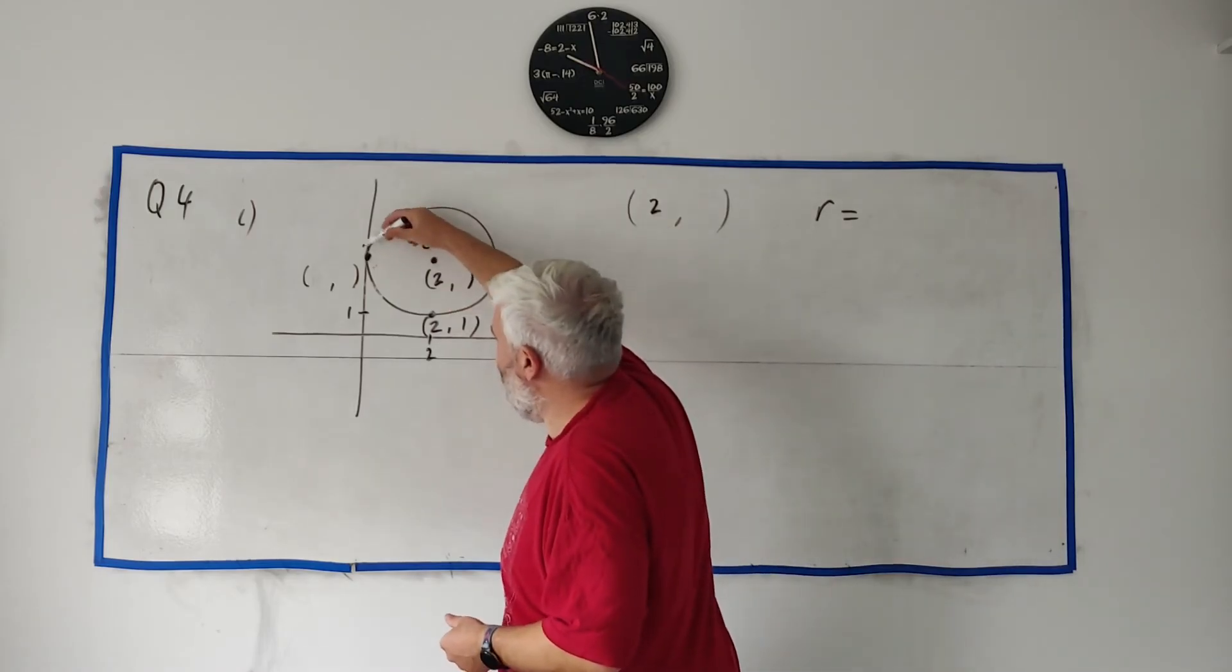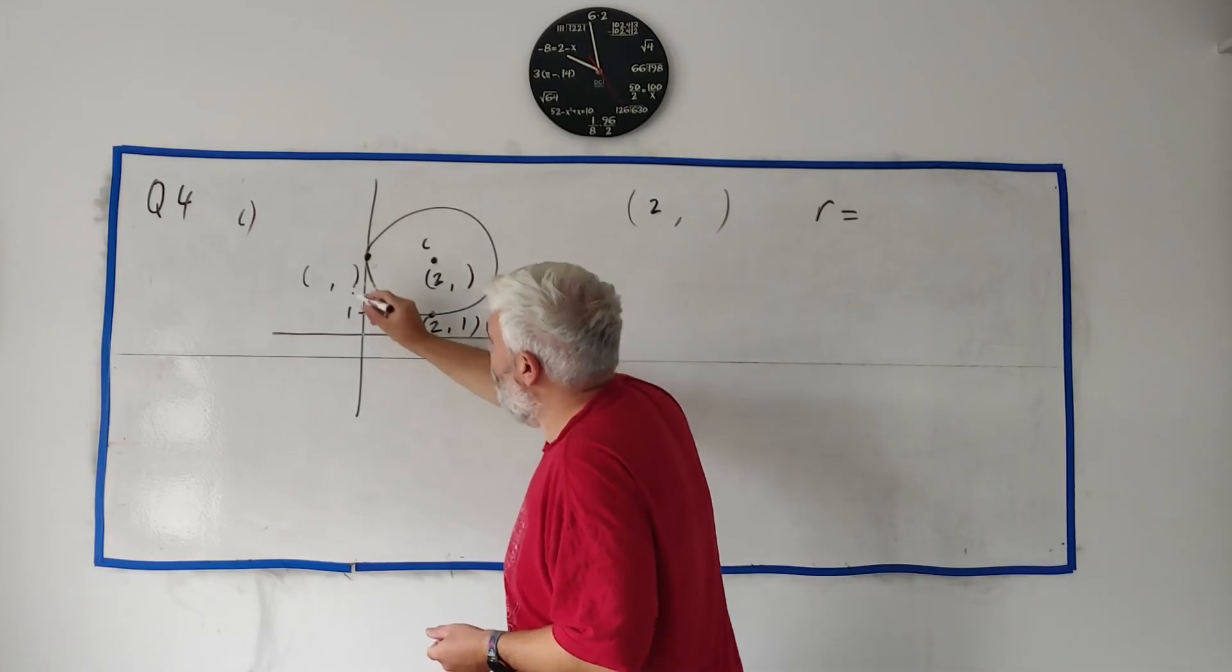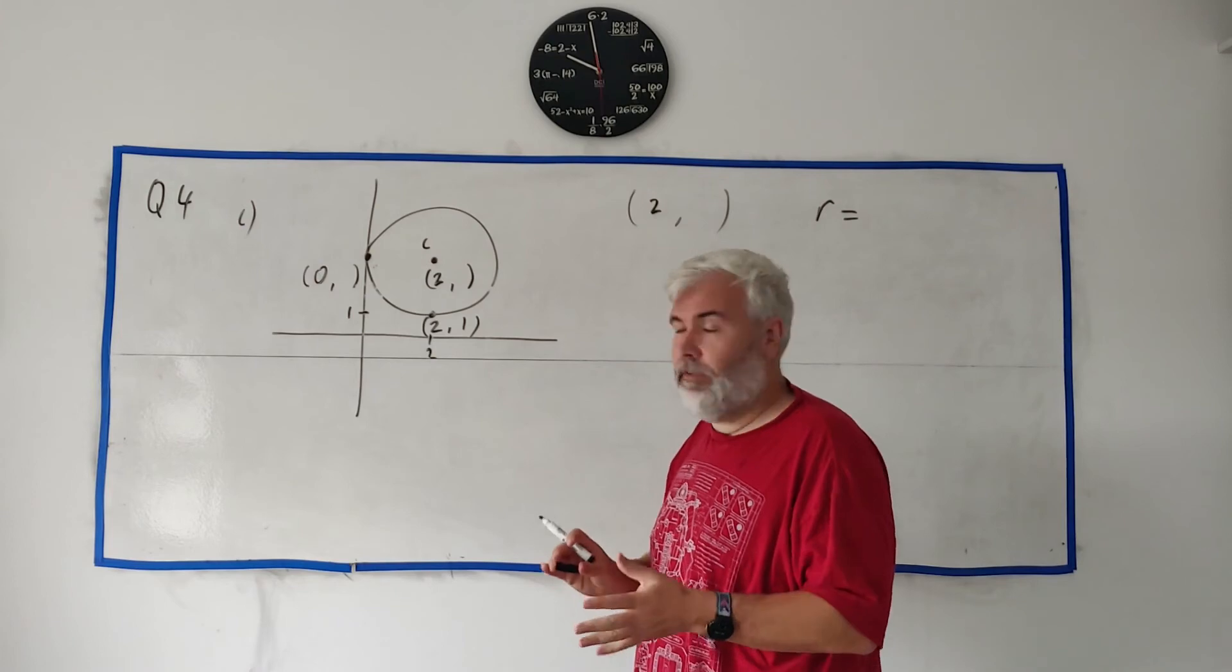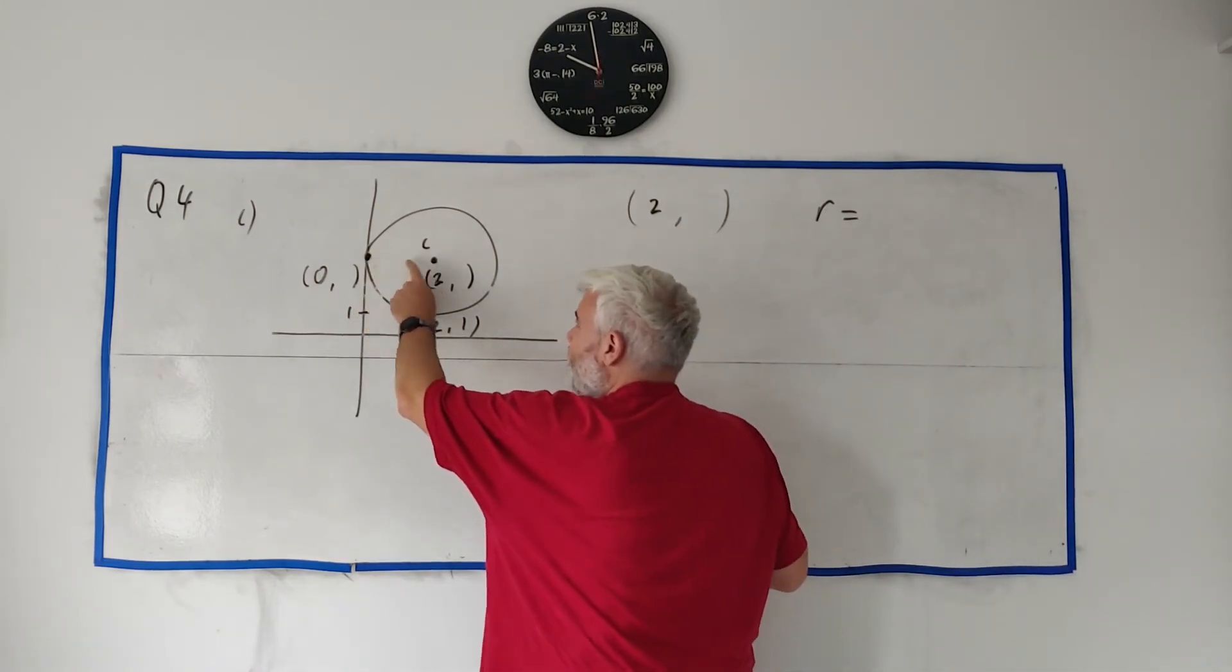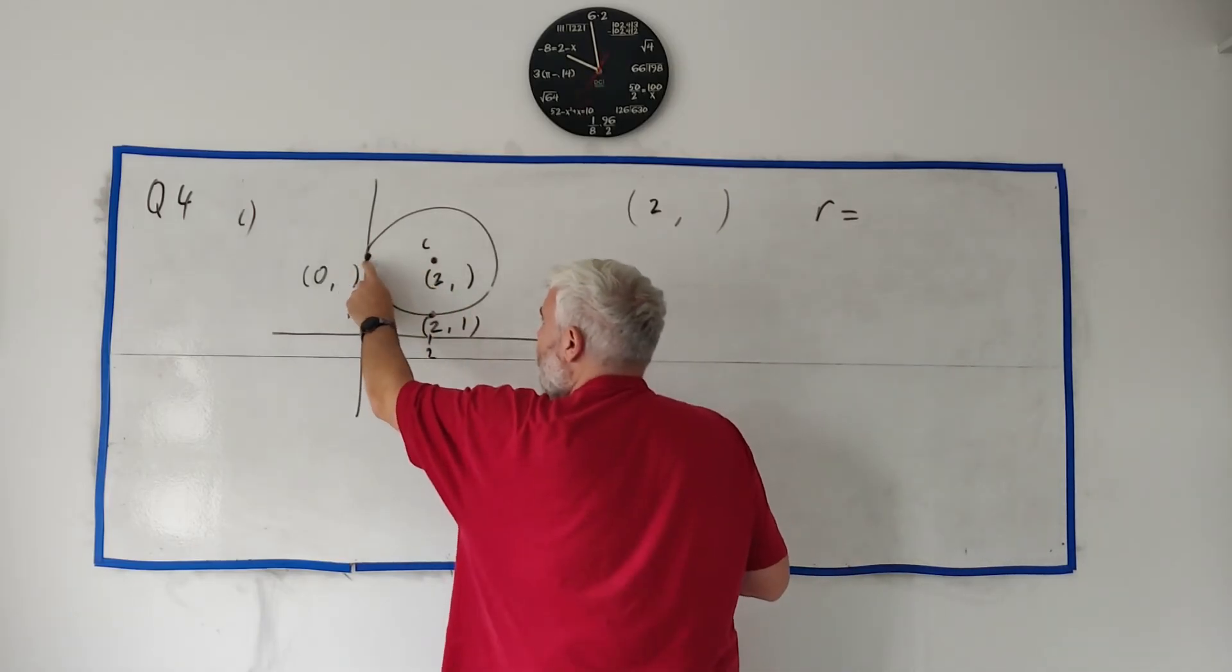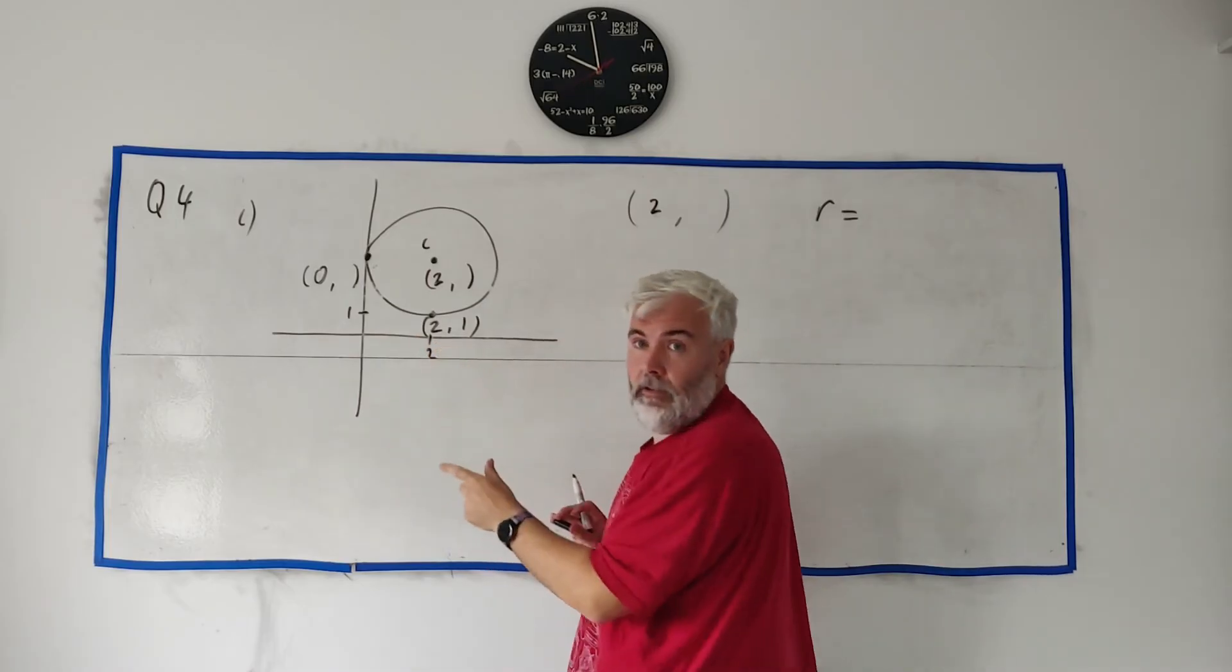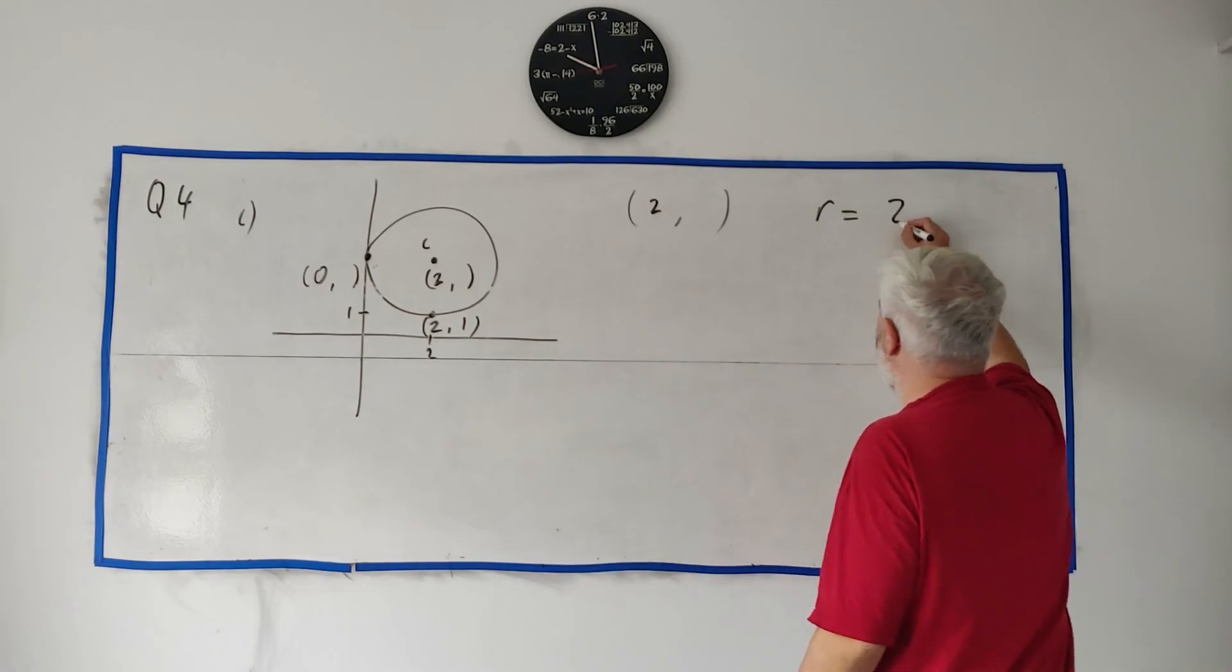So is there any other numbers we can fill in? This point here. We know it is above here. This is (2, 1, 0). We know its X part is 0. Now we have to do a bit of solving here. How far is it from this point to this point? Because that's the radius. How far from here to here? How far from here to here? It's 2. It's of length 2. So we know the radius is 2.